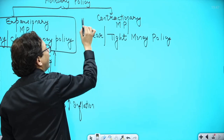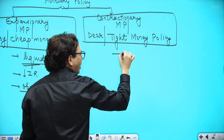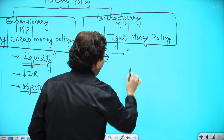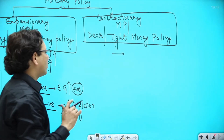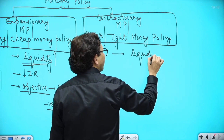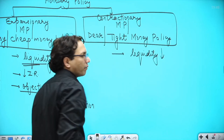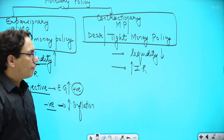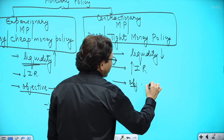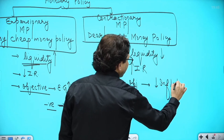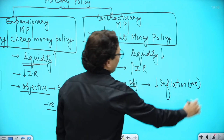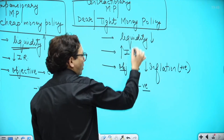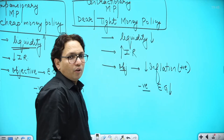In contractionary monetary policy, the RBI increases the interest rates. The liquidity in the economy would be reduced by increasing interest rates. The objective is to bring down inflation, which is also the positive of following contractionary monetary policy. The negative is that the decreased liquidity would also bring down economic growth.